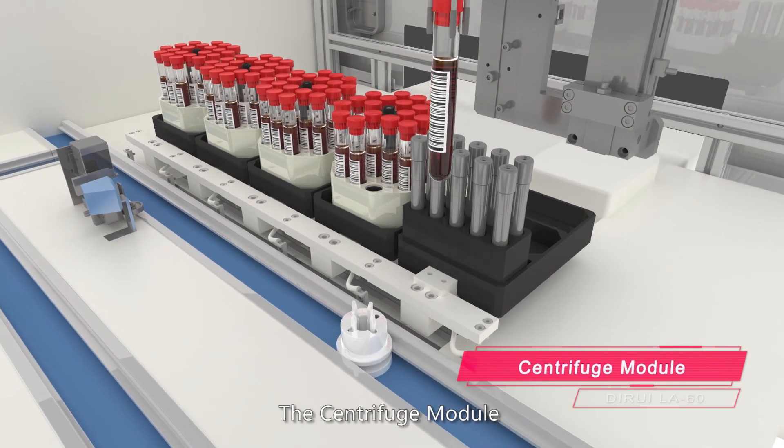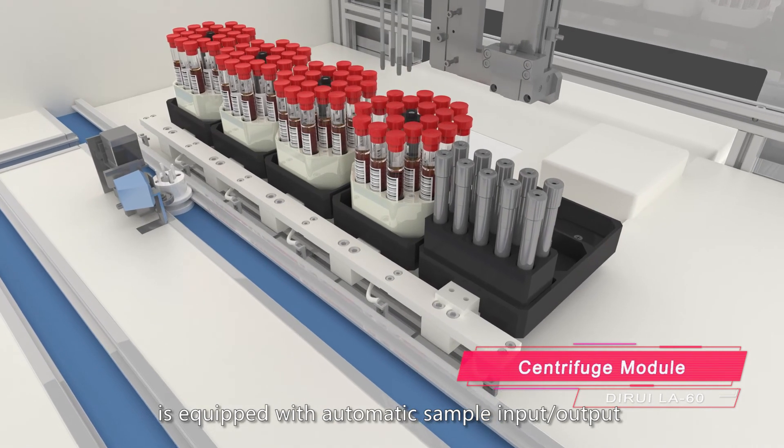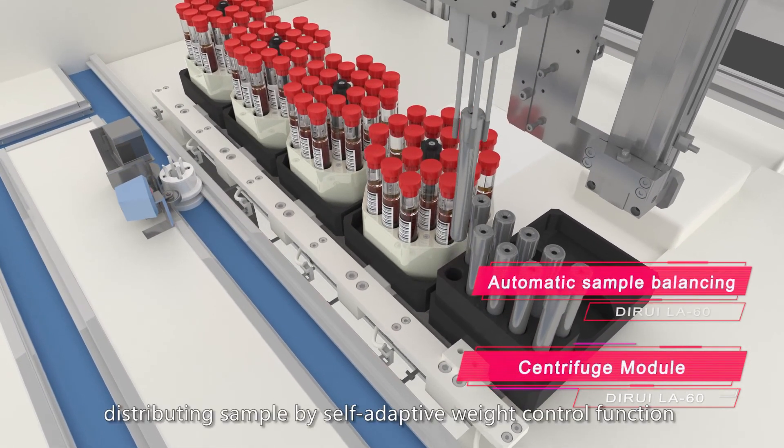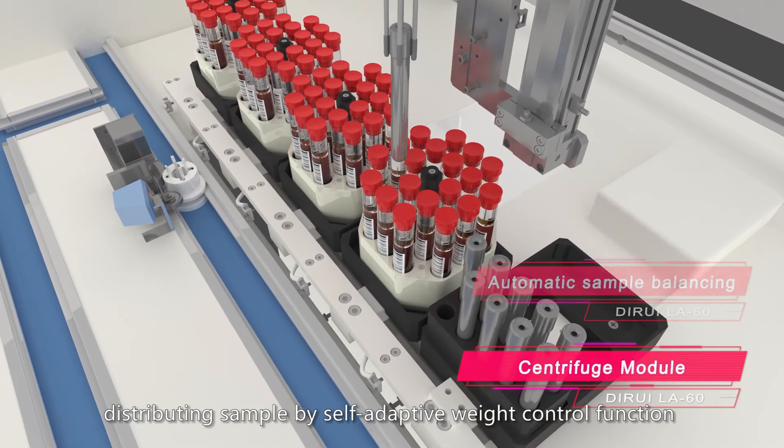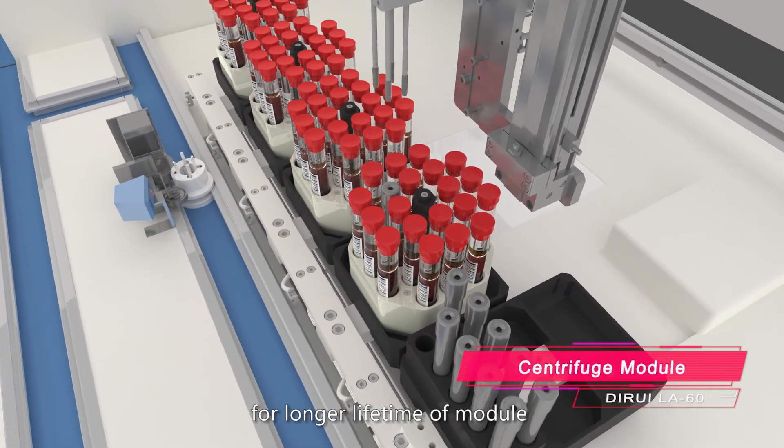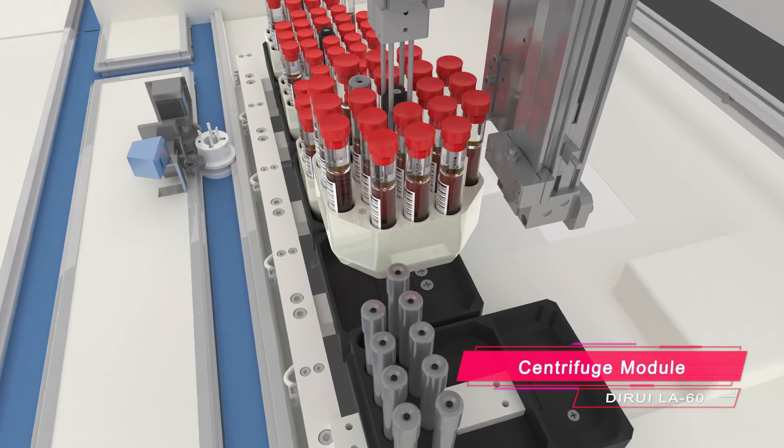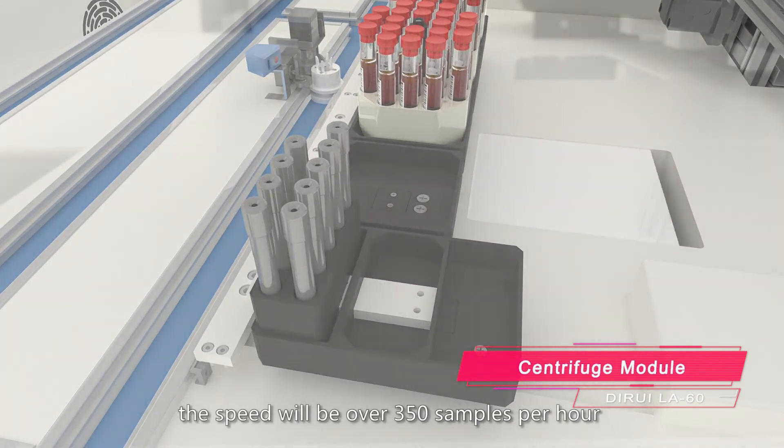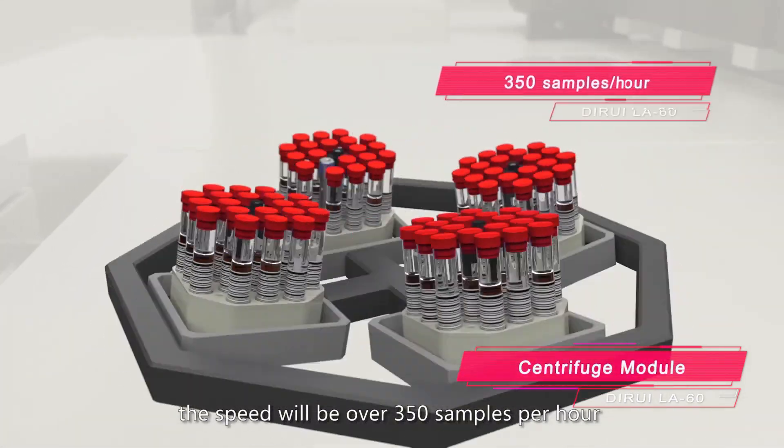The centrifuge module is equipped with automatic sample input-output and auto-balancing technology, distributing samples by self-adaptive weight control function for longer module lifetime. The centrifuge parameter can be set up as demand. The speed will be over 350 samples per hour.